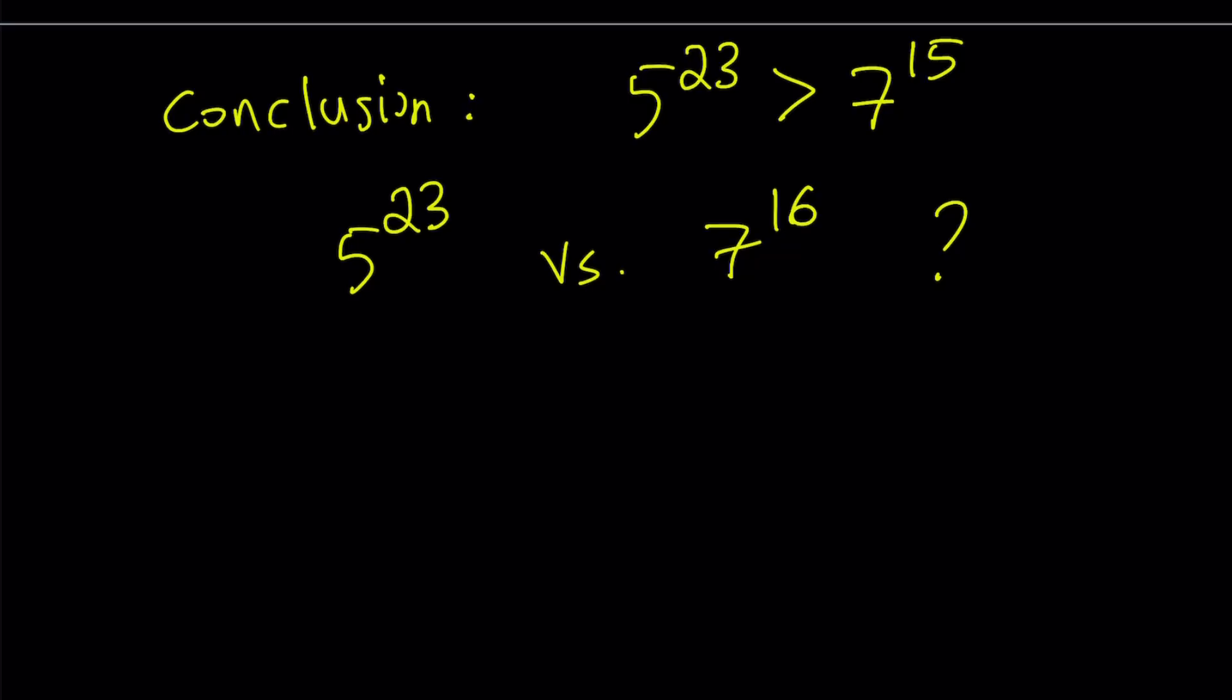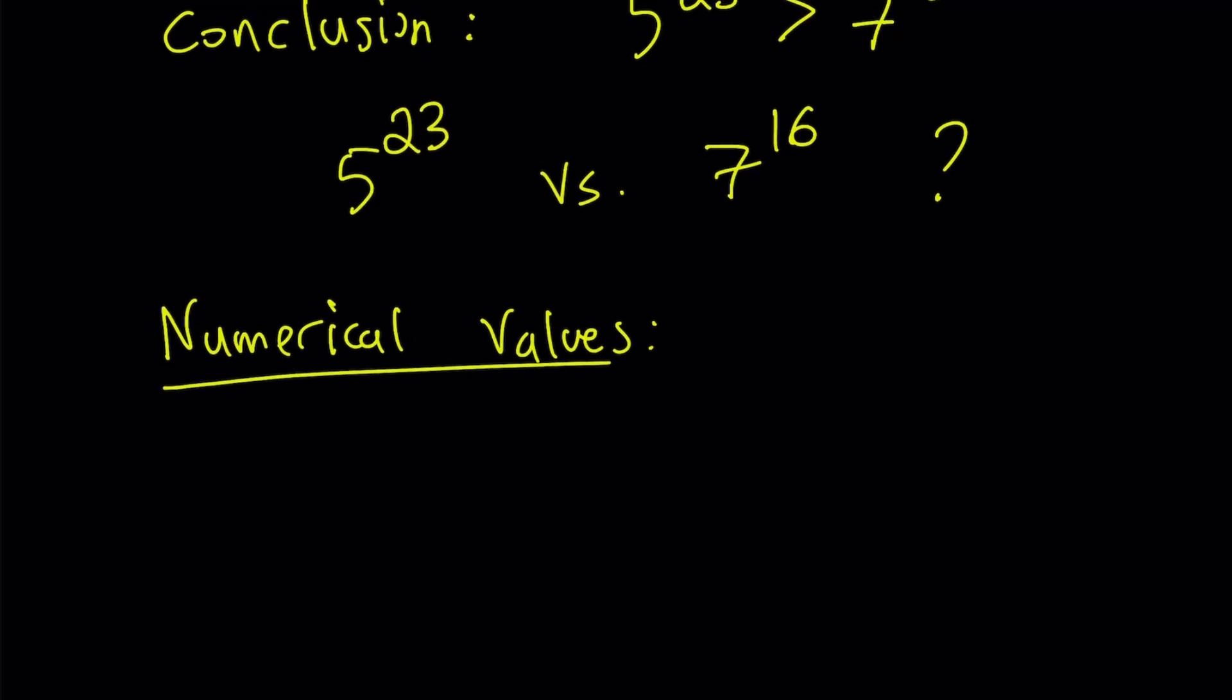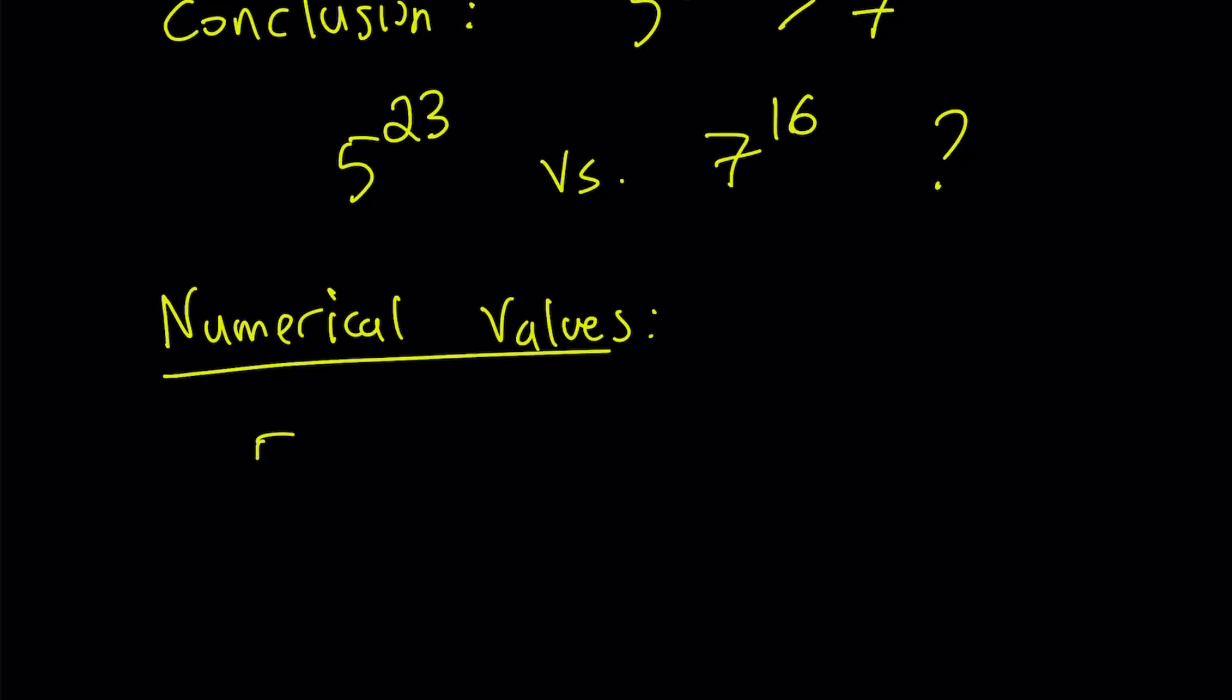Let's talk about numerical values and we're going to conclude. These numbers are actually very much apart. They're not really close. That's why I wanted to bring up these two numbers for your attention. If you evaluate them, approximately 5 to the power 23 is going to be 1.19 times 10 to the power 16. And 7 to the power 15 is going to be about 4.75 times 10 to the power 12.